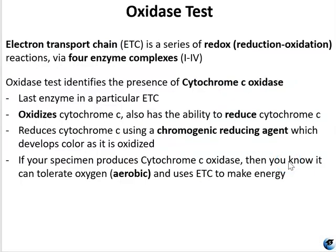Finally, we will have the oxidase test. The oxidase test is linked to the electron transport chain and helps differentiate species by their ability or inability to utilize the ETC as an aerobic process. In aerobic respiration, the final electron acceptor at the end of the ETC is an oxygen molecule that becomes reduced to water by the final ETC carrier, which is cytochrome oxidase. Cytochrome oxidase differs between bacterial types and can be used to differentiate closely related bacteria for diagnostic purposes. At the very least, if a specimen produces cytochrome C oxidase, you know that it can tolerate oxygen and use the ETC to make energy.